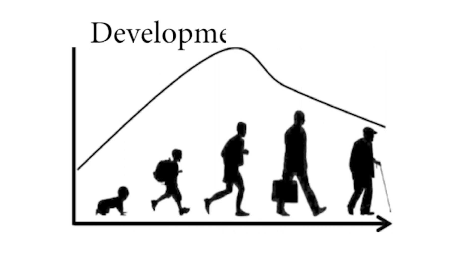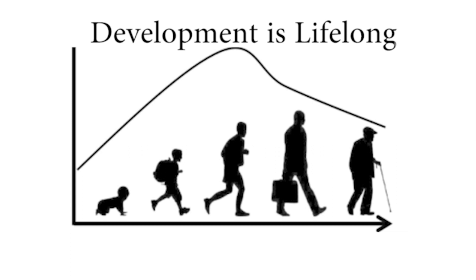The first principle states that development is lifelong. Baltus discussed that this belief has two separate aspects. First, the potential for development extends across the entire lifespan — that is, there is no assumption that the life course must reach a plateau or decline during adulthood or old age. Second, development may involve processes which are not present at birth, but emerge throughout the lifespan.